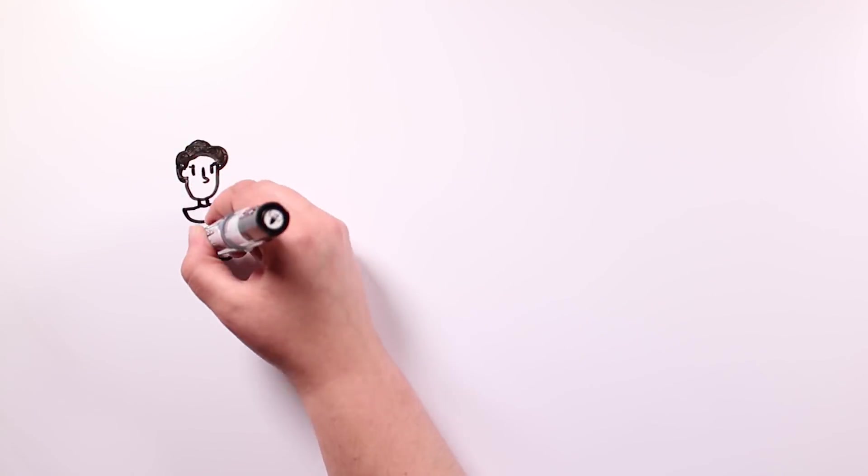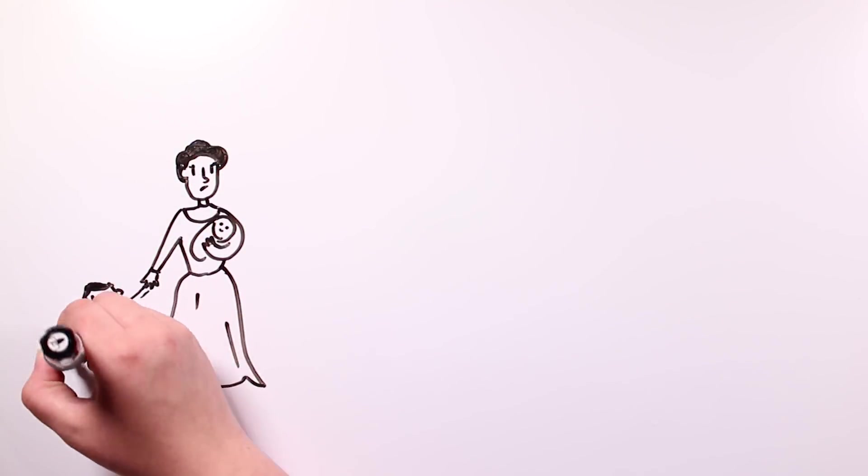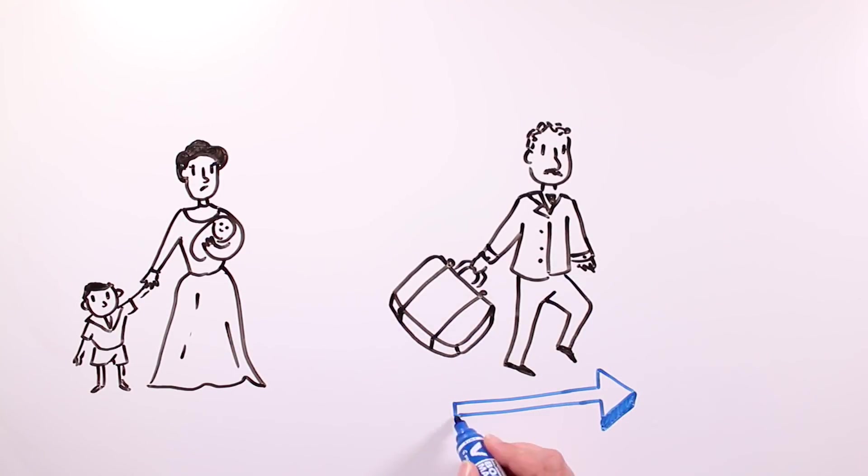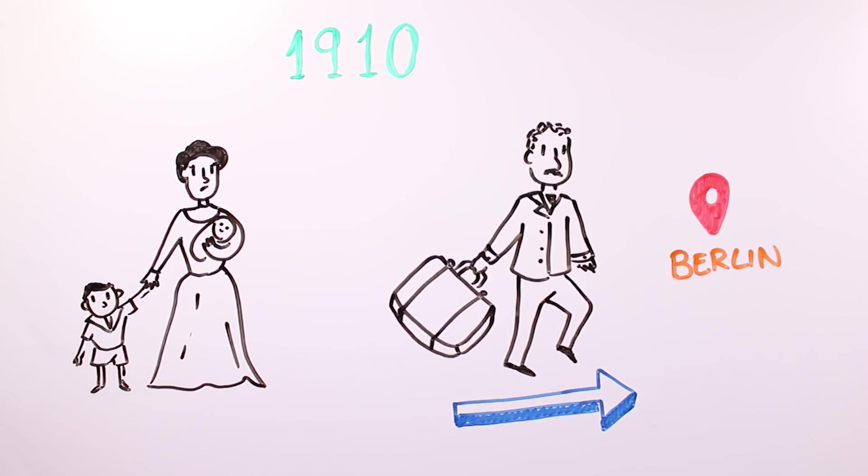In 1910, their third kid was born, Edward Einstein, and Albert moved to Berlin, leaving his family in Switzerland. Meanwhile, he was named a member of the Prussian Academy of Sciences.